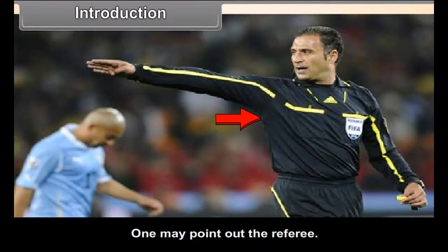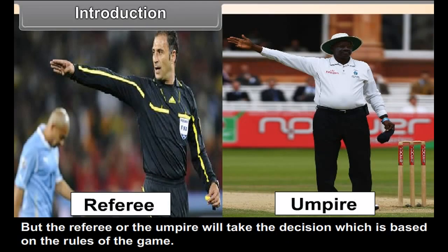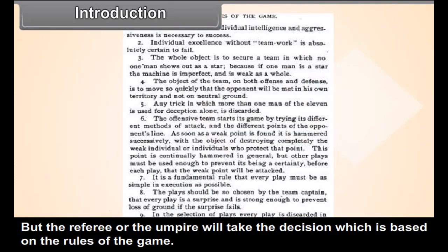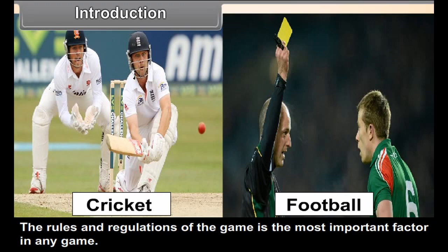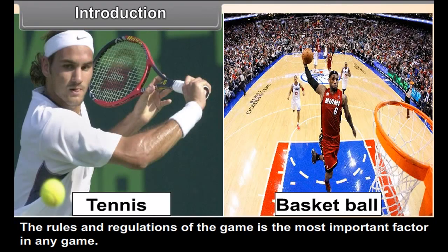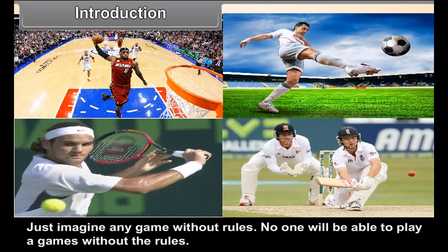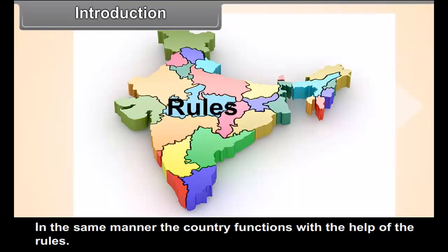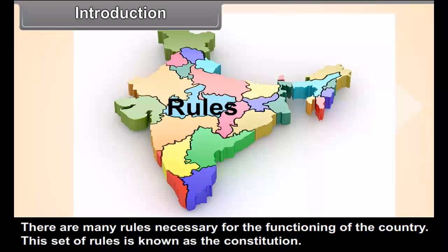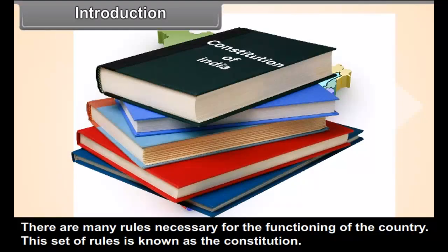One may point out the referee. But the referee will take a decision which is based on the rules of the game — the referee cannot decide without referring to the rules. The rules and regulations of the game are the most important factor. Just imagine any game without rules; no one would be able to play. In the same manner, a country functions with the help of rules, and this set of rules is known as the Constitution.